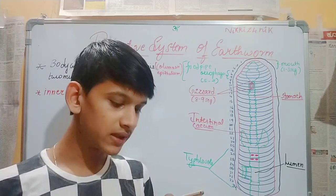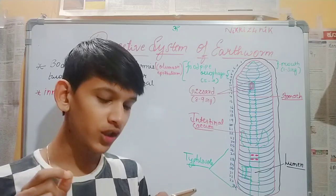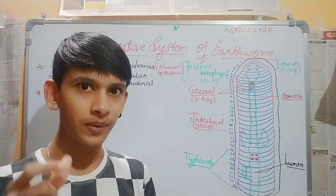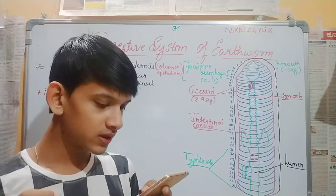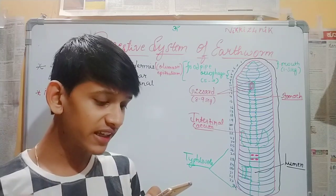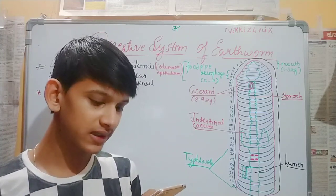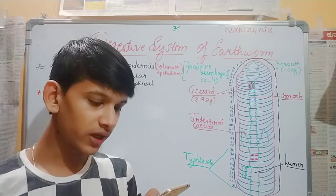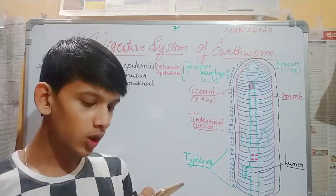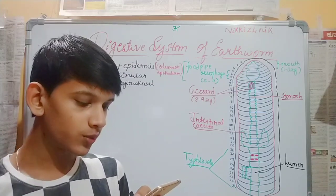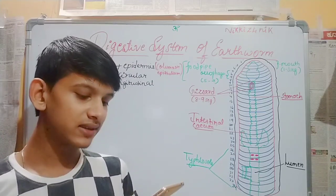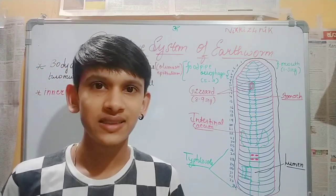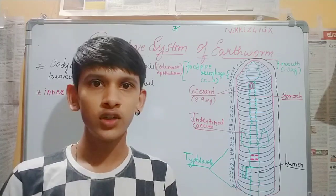The alimentary canal opens to the exterior by a small aperture called anus in the last segment. The ingested organic-rich soil passes through the digestive tract where digestive enzymes break down complex food into smaller absorbable units.